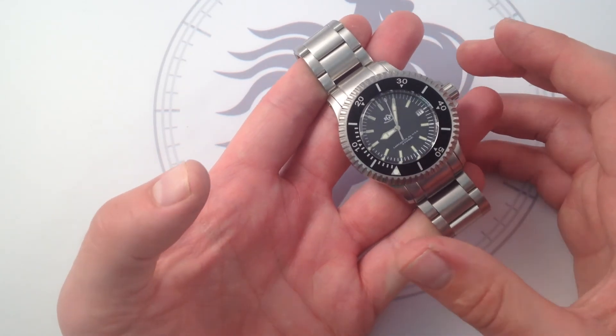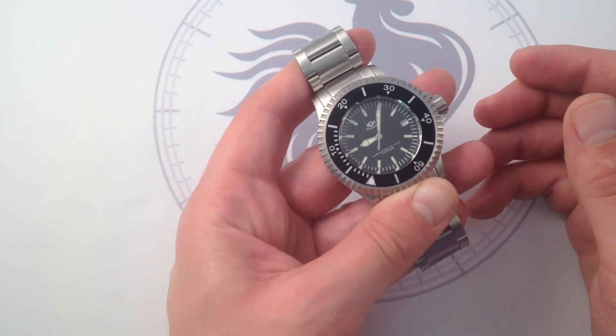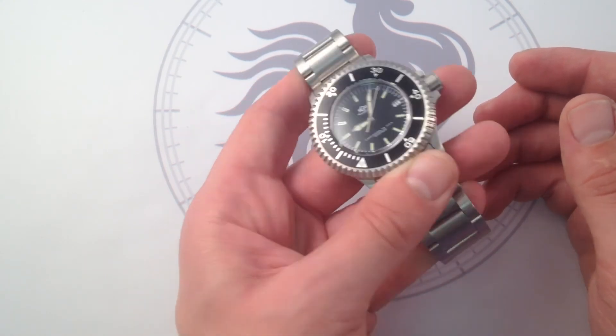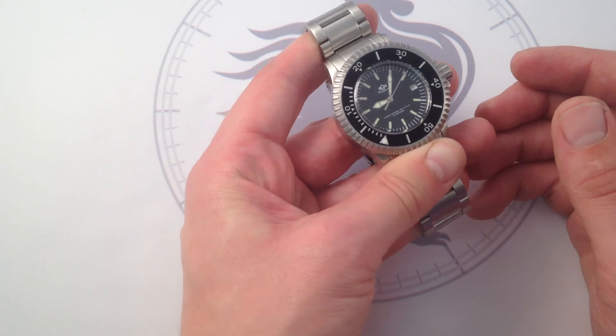It's a very fluid winding system, so unlike a lot of Valjoux 7750-based unidirectional winders, there's no rotor wobble on your wrist.